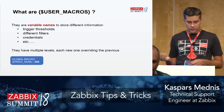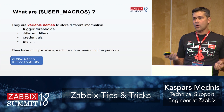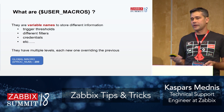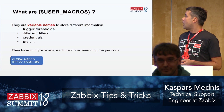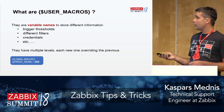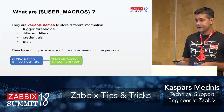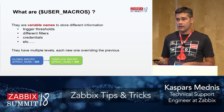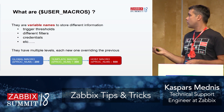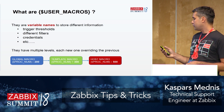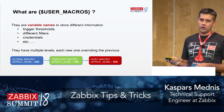What are user macros? Basically they are just variable names. You can store different information like trigger thresholds, credentials, and other things. Macros have three levels: you can define global ones, override macros on the template level, and then customize them on the host level. Usually you will work with template macros and then just customize them on the host level.